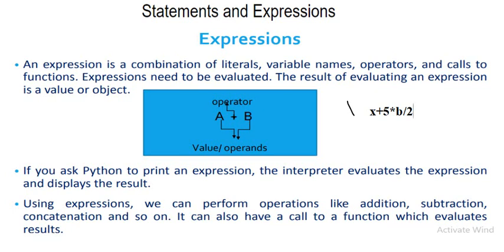Here, x is a variable. The plus sign is an arithmetic operator. The value 5 is a constant. The star symbol is a multiplication operator, which is also an arithmetic operator. The variable b is another variable. The slash is an arithmetic operator for division, and 2 is another constant. So all these variables, constants, and operators together constitute an expression.